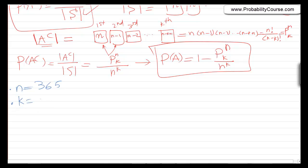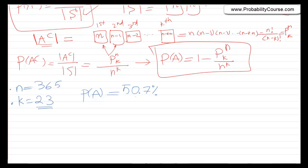Let's pick some specific numbers. N is always 365 in this example. Let's say k equals 23 — there are 23 people at this party. Most people guess that the probability of at least two people sharing a birthday with only 23 people is not that large. But if you calculate it, the probability turns out to be around 50.7%, just above 50%. So with 23 people at a party, there's better than even odds of finding two people with the same birthday.